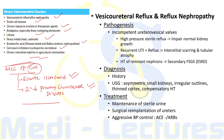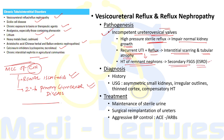Reflux nephropathy is the consequence of vesicoureteric reflux (VUR) or other urologic anomalies in childhood. VUR occurs due to abnormal retrograde urine flow from the bladder to one or both ureters due to an incompetent ureterovesical junction. High-pressure sterile reflux impairs normal kidney growth; reflux with UTI leads to interstitial scarring and tubular atrophy. After atrophy, hypertrophy of remnant nephrons can lead to secondary focal segmental glomerulosclerosis and ultimately end-stage renal disease.